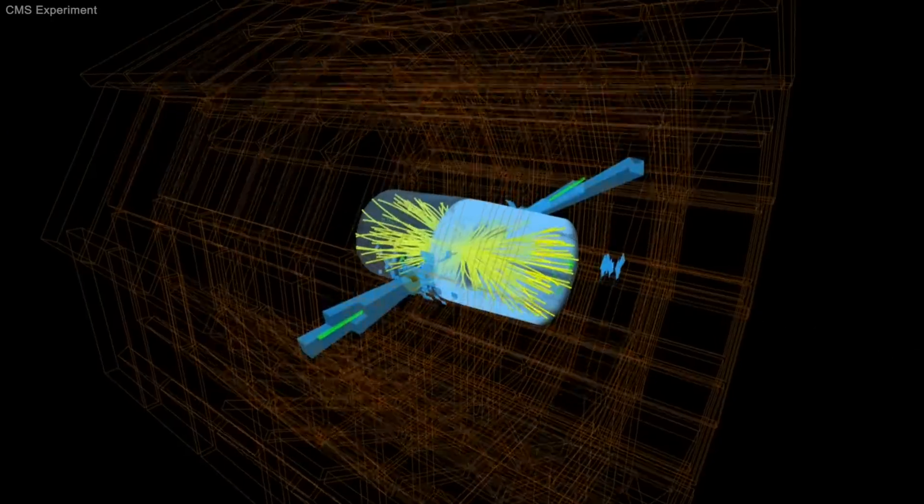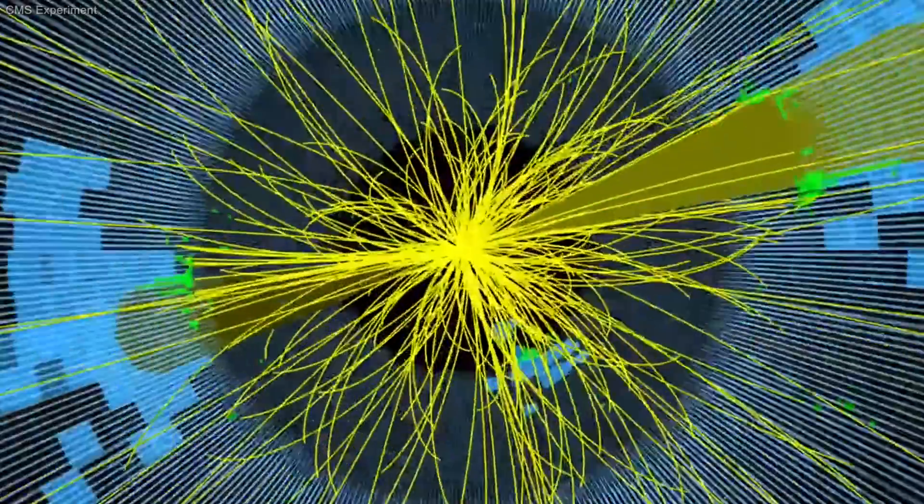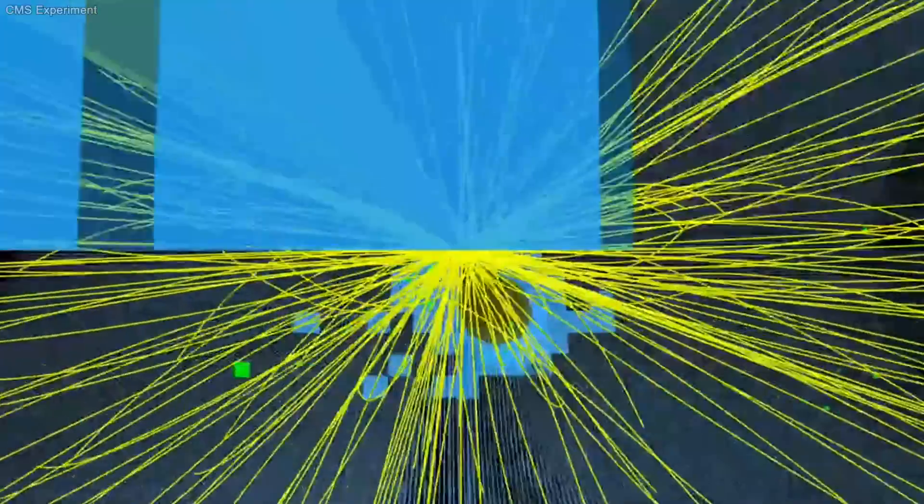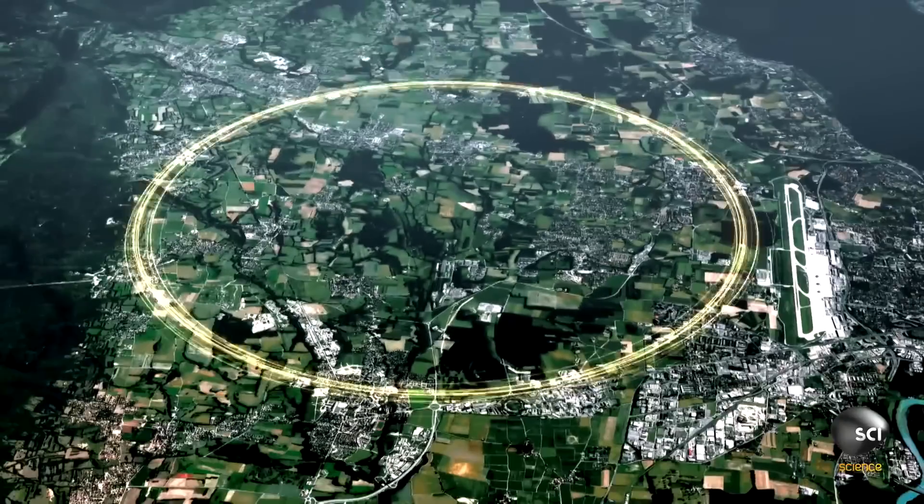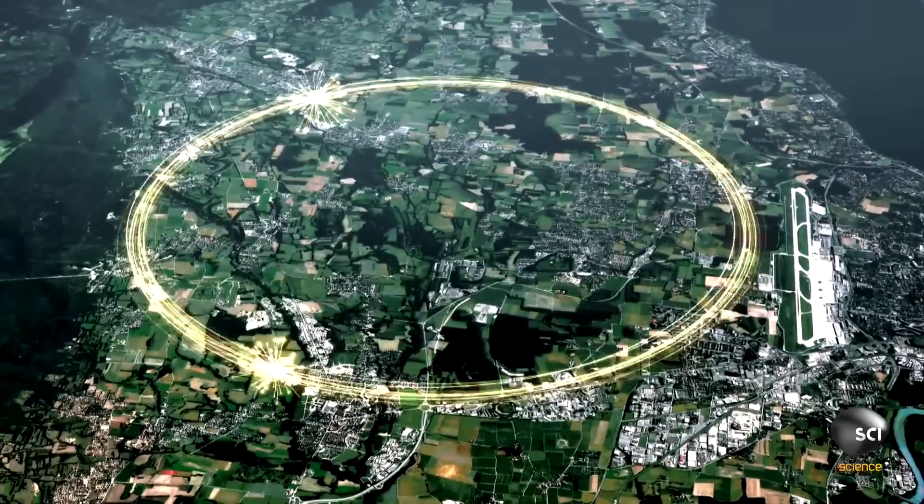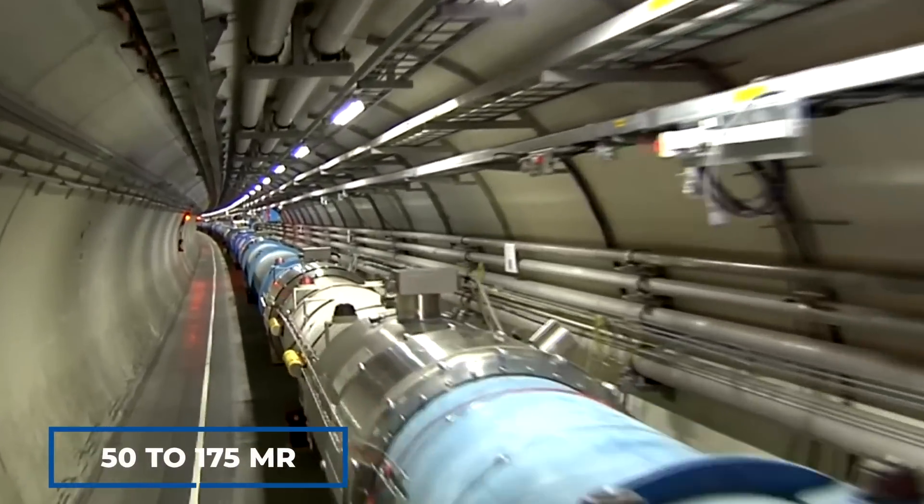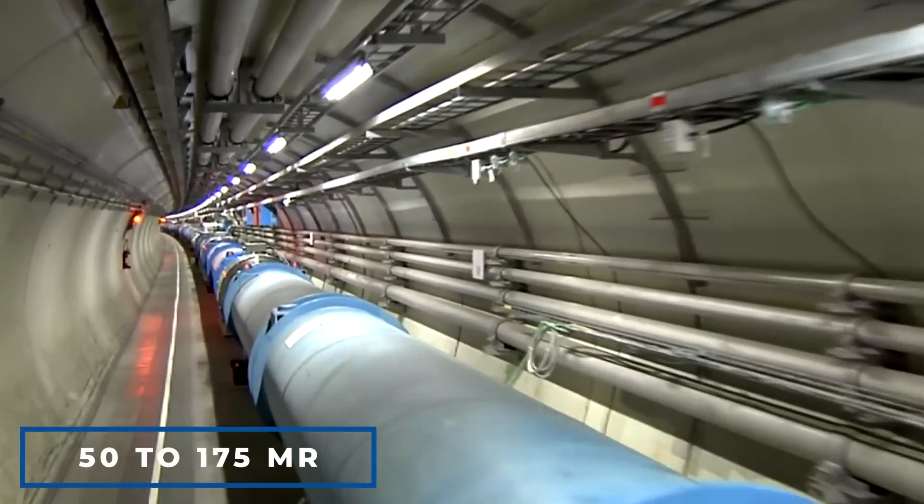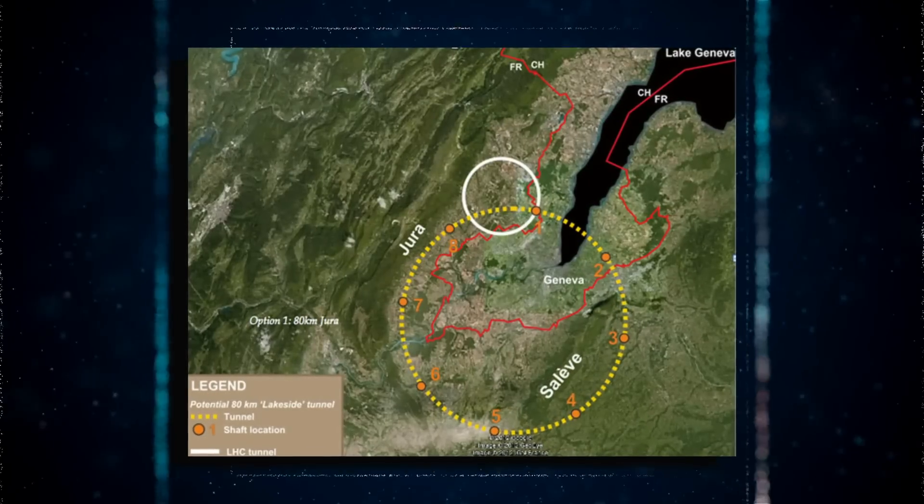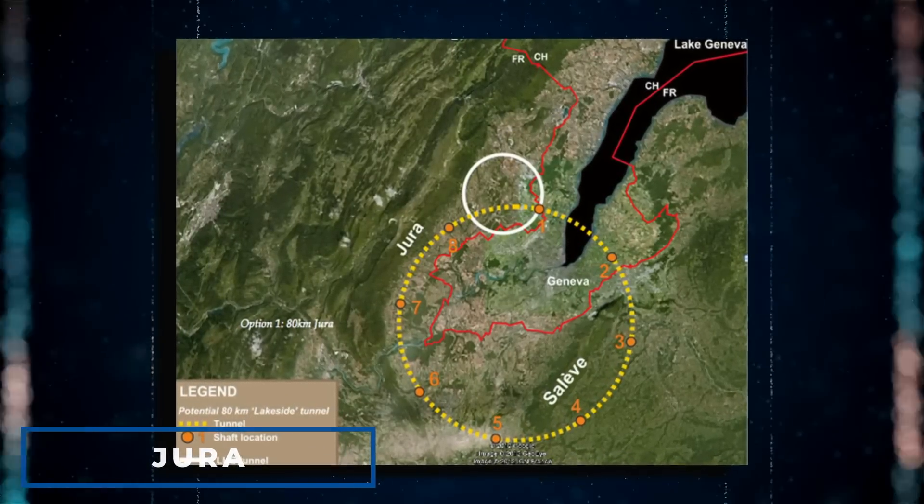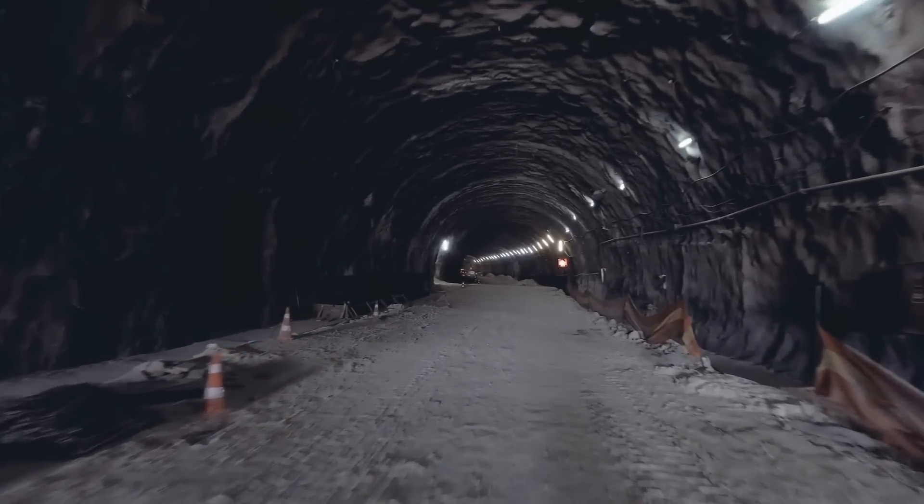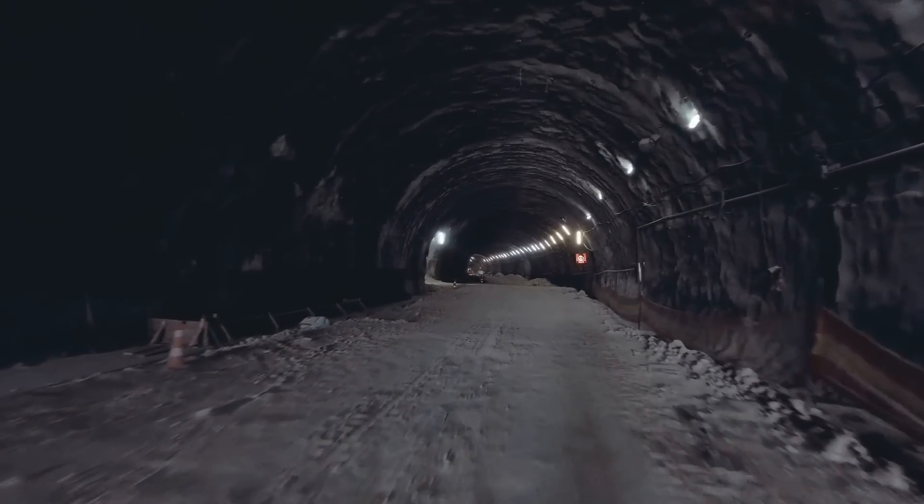Many of the byproducts are only formed by high-energy collisions and decay in extremely short periods of time, making it impossible to examine them in any other way. The Large Hadron Collider is housed in a circular tunnel that is 50 to 175 meters underground.